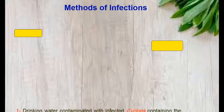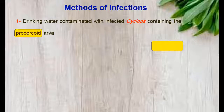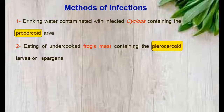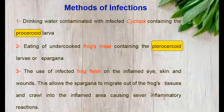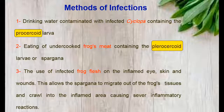Methods of infection with sparganosis: Number 1, drinking water contaminated with infected Cyclops containing plerocercoid. Number 2, eating undercooked frog's meat containing plerocercoid, or the use of infected frog on inflamed eyes, skin, and bones.